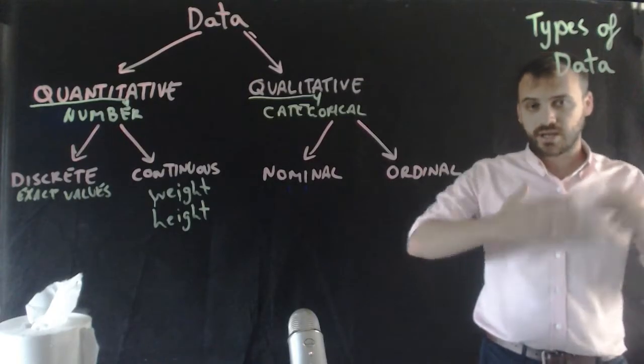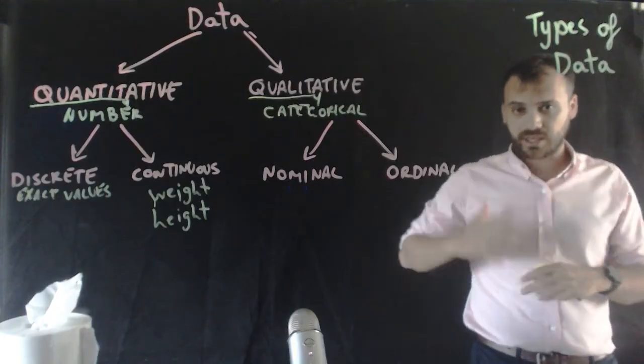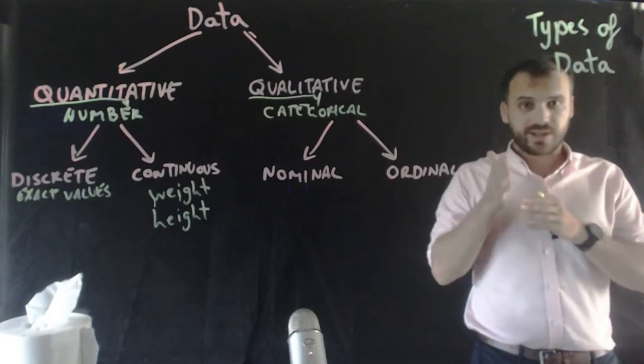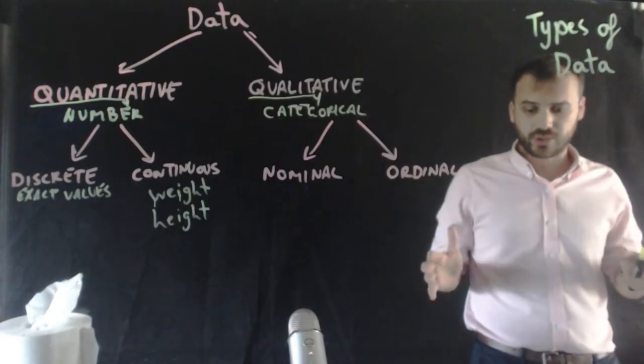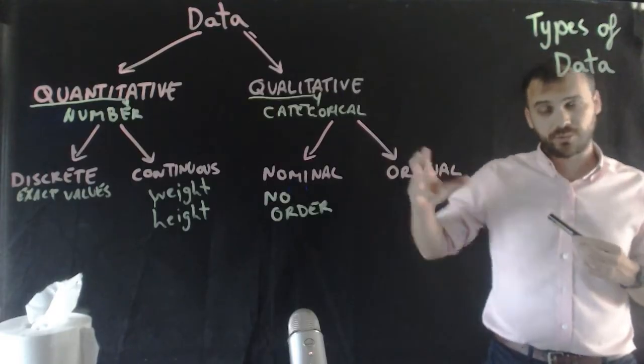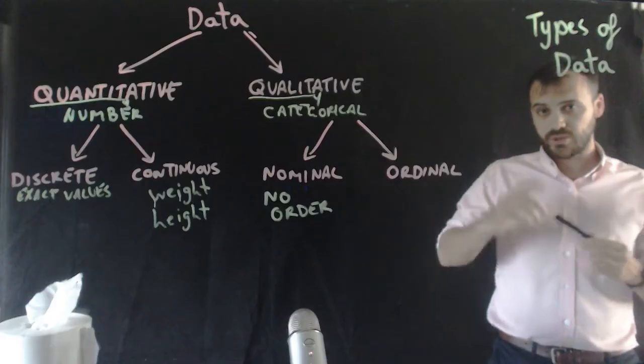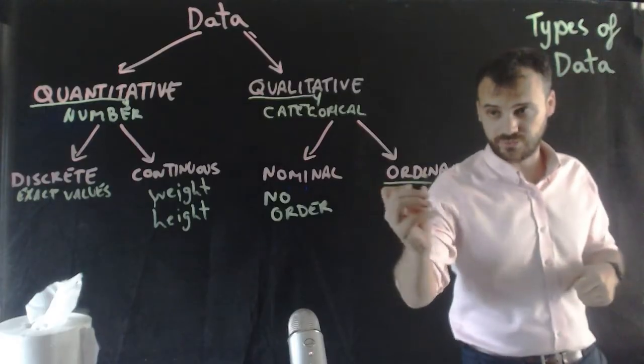So a red car, a blue car, a black car, a white car, they're just categories. They have no order to them at all. Now, if that means that nominal has no order, then ordinal means that you have an order.